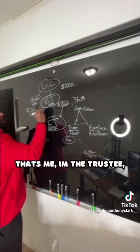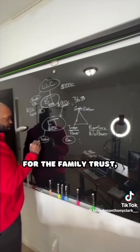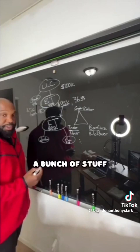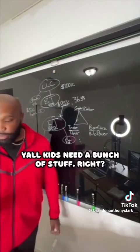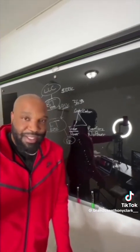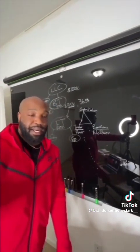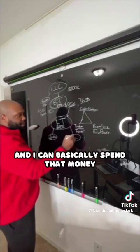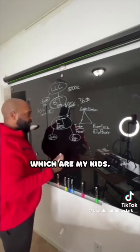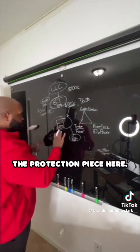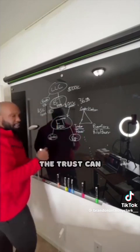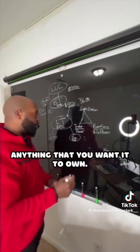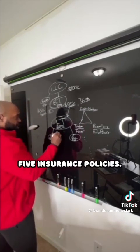Guess who the trustee is of the family trust? That's me. The beneficiary is my kids, and kids need a bunch of stuff. So now I get to pass that income through all of my entities without paying taxes and basically spend that money on the beneficiaries — my kids. That's the protection piece. The trust can own things like automobiles, property — you can literally own anything you wanted to own.